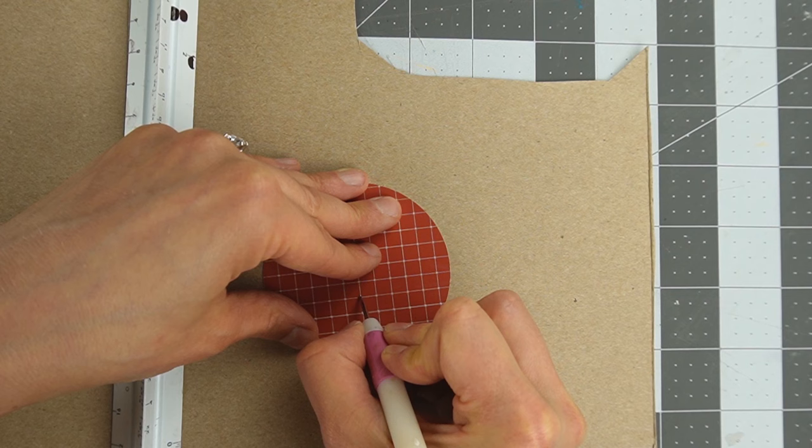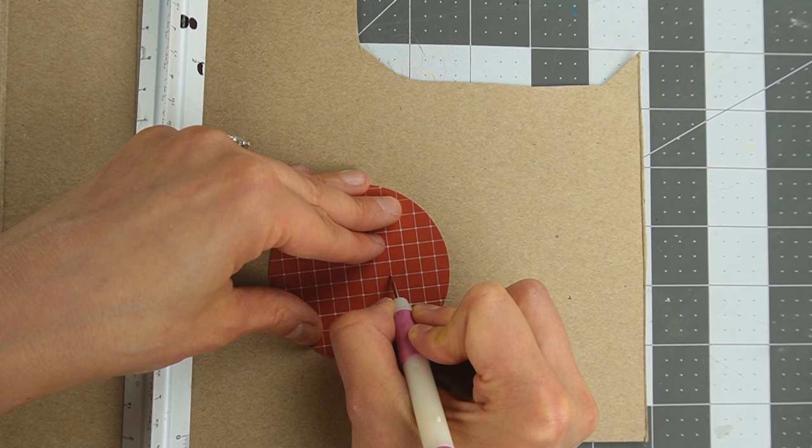To give the tiles some dimension, I'm using a ball stylus and a couple layers of cereal box to indent the grout lines.